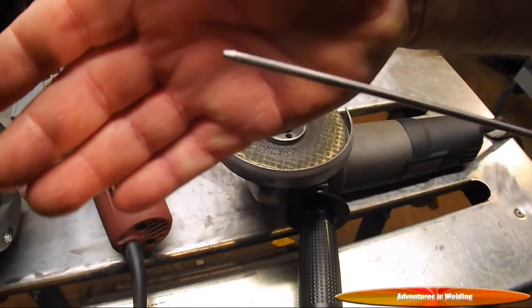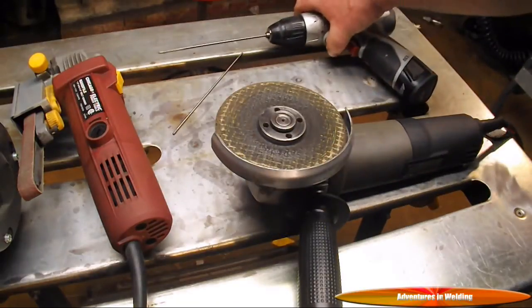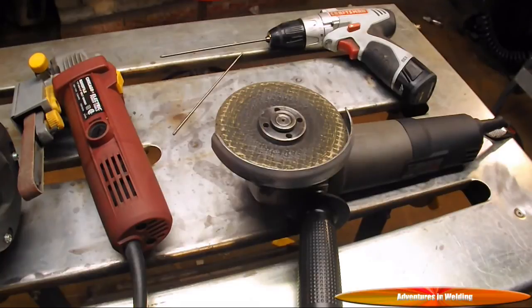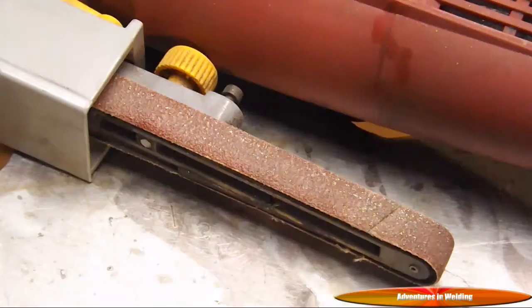And there you can see we've got a nice truncated point on there. One final note, if you're using the grinding disc to grind your tungstens, make sure you mark that disc and you don't use anything else, so you do not get cross-contamination.